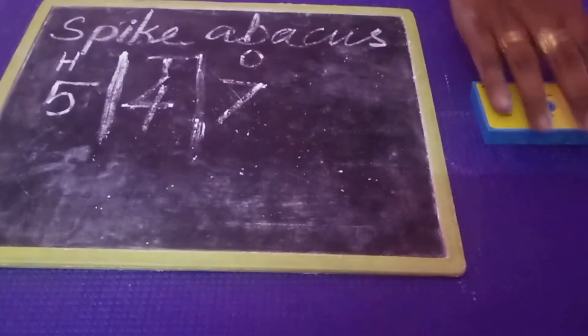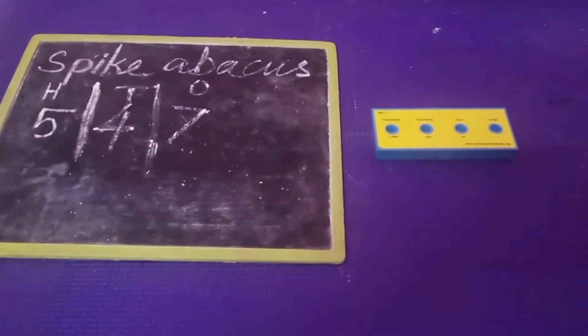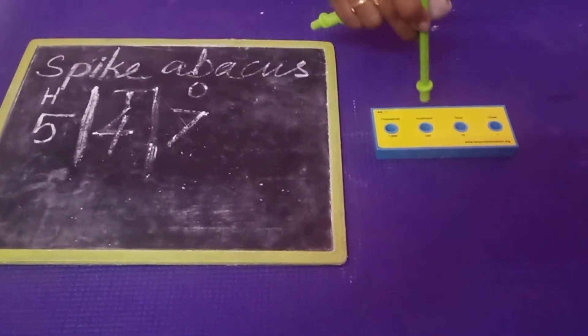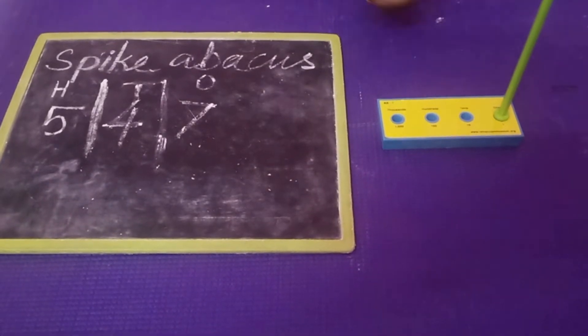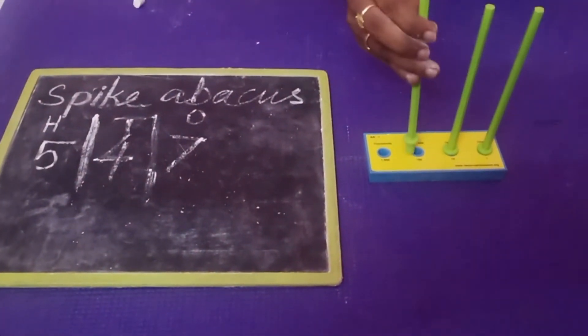Since it is a 3-digit number, we have to fix 3 spikes: 1, 2, 3.